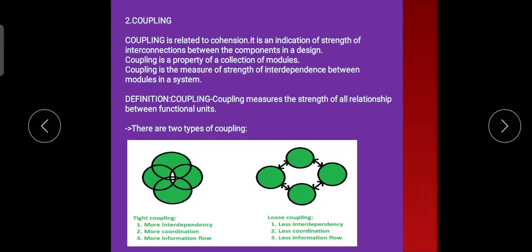Coupling is related to cohesion. It is an indication of strength of interconnections between the components in a design. Coupling is a property of a collection of modules. Coupling is a measure of strength of interdependence between modules in a system. Coupling measures the strength of all relationships between functional units.